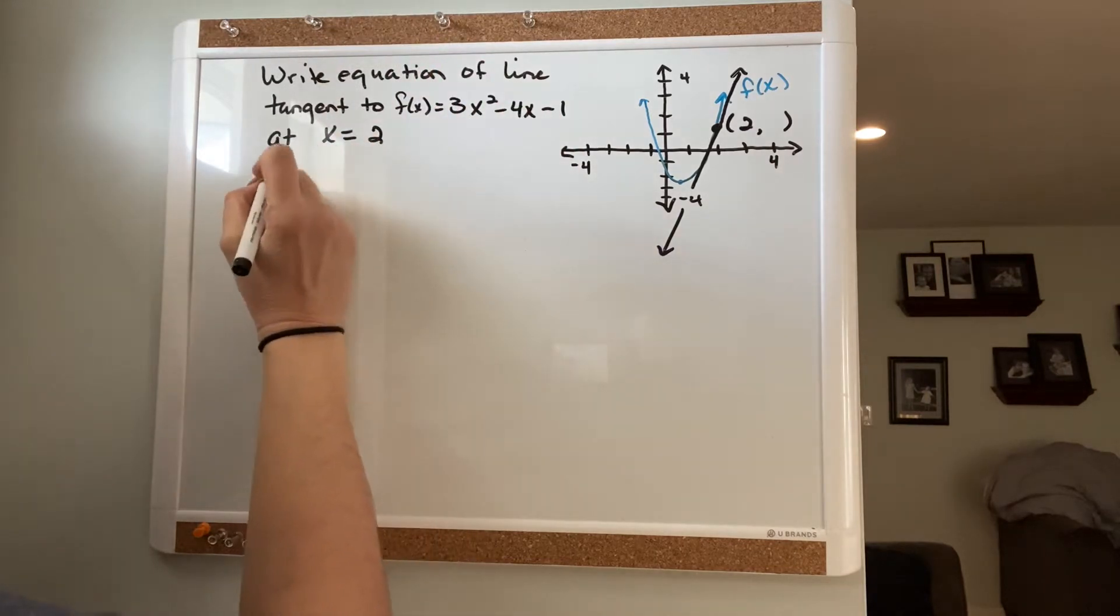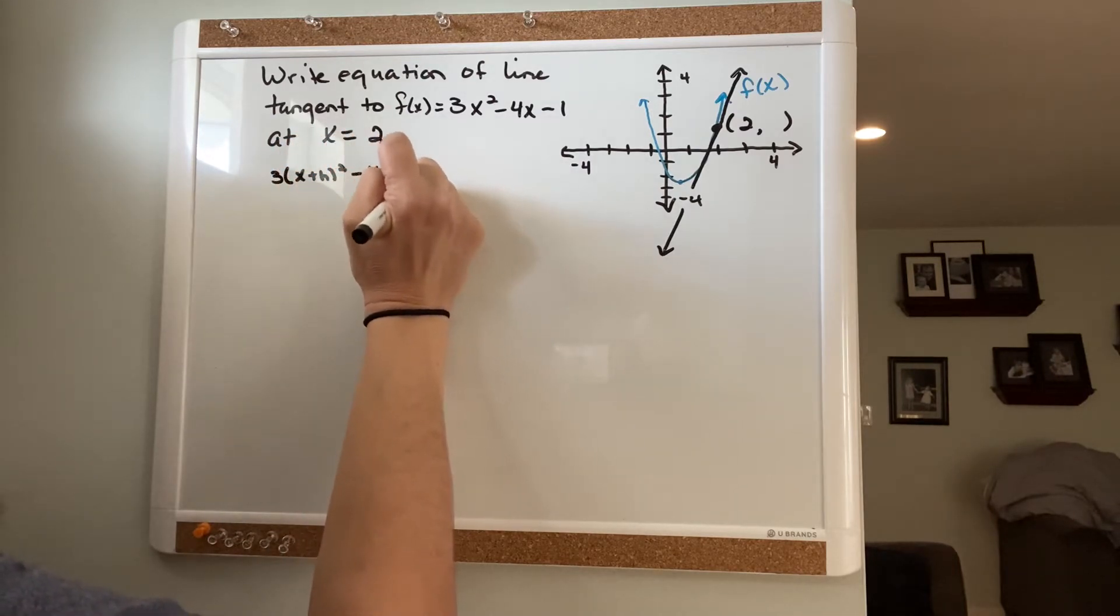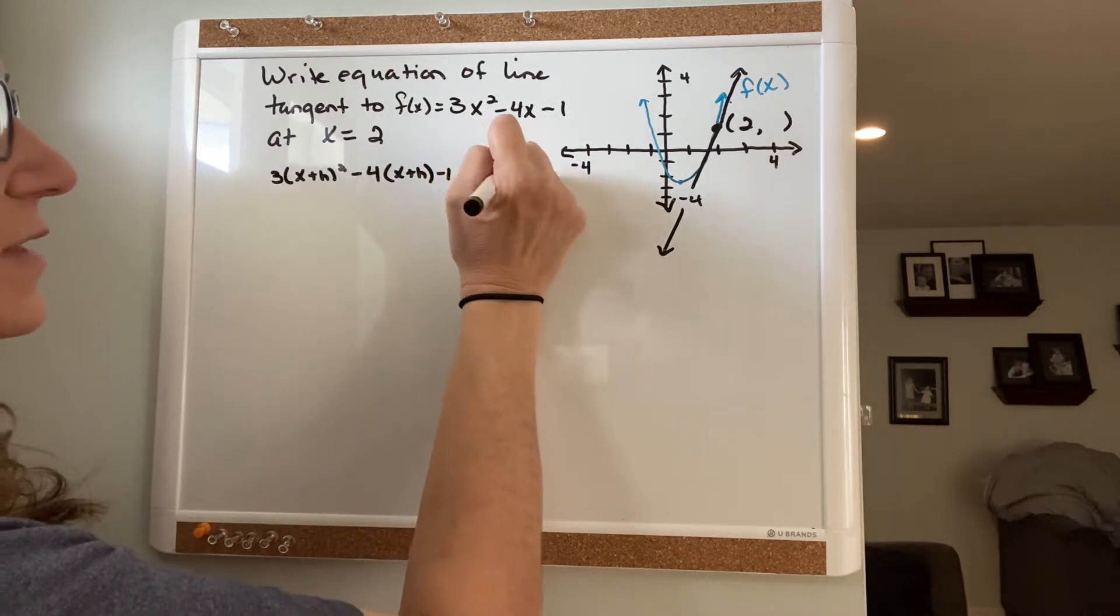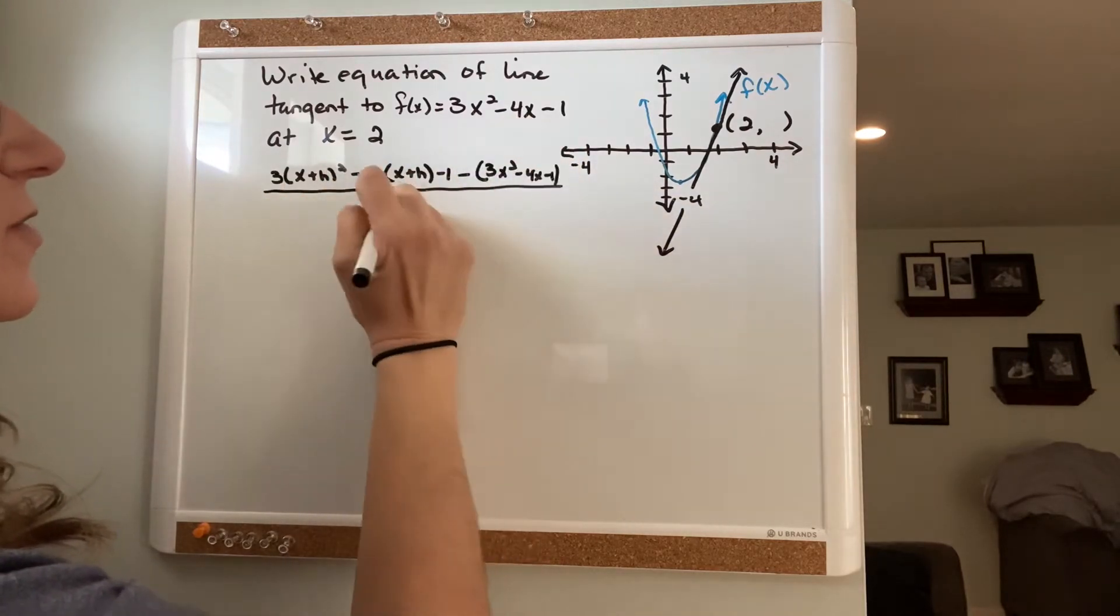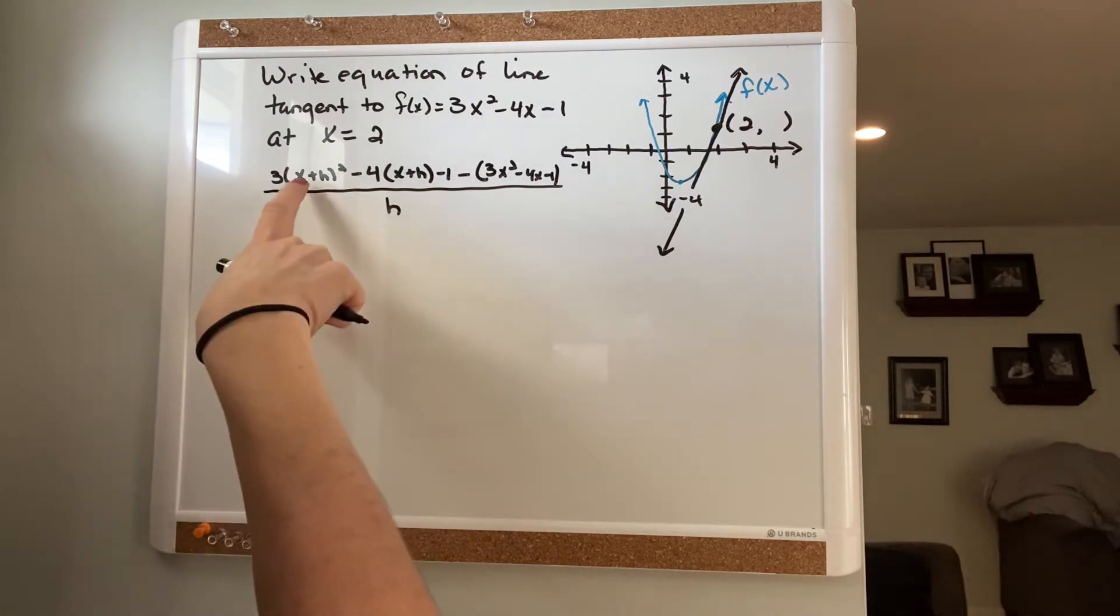3 times (x + h)² minus 4 times (x + h) minus 1 minus the function 3x² minus 4x minus 1, all over h. You guys know that (x + h)² will give you x² plus 2xh plus h².